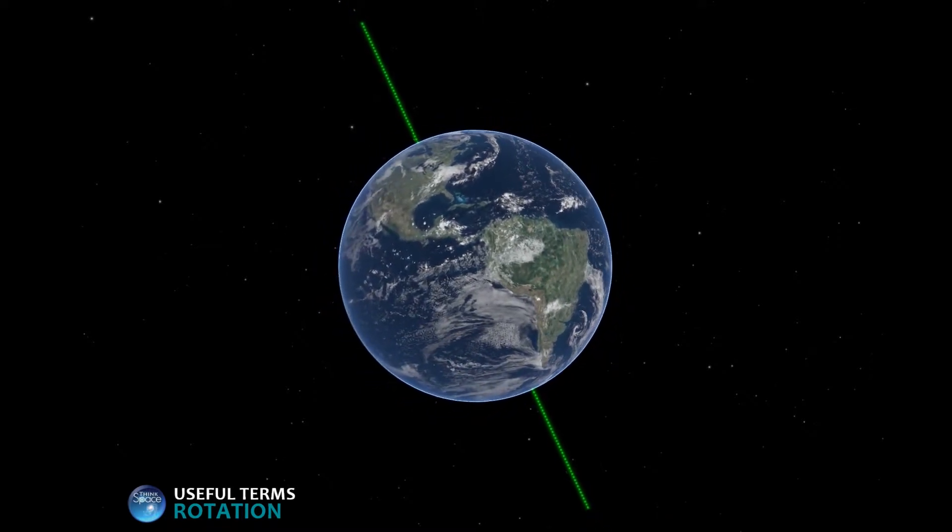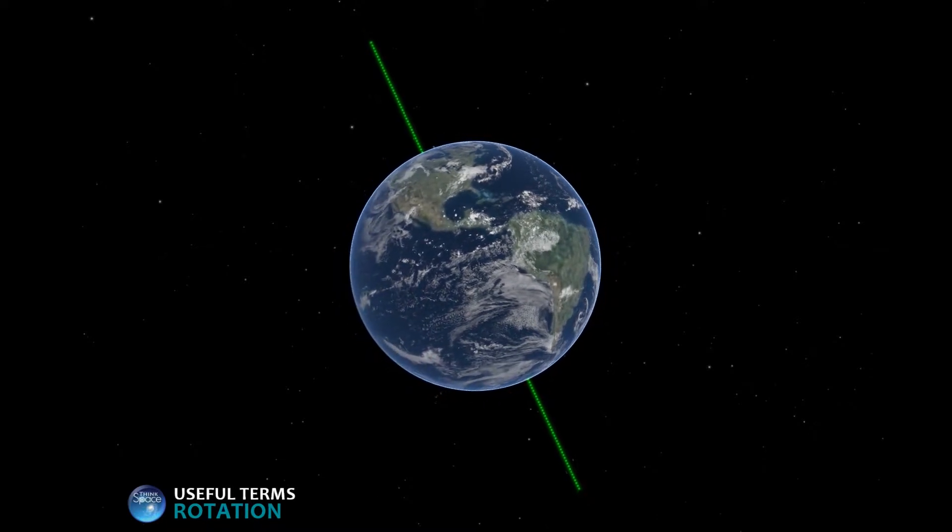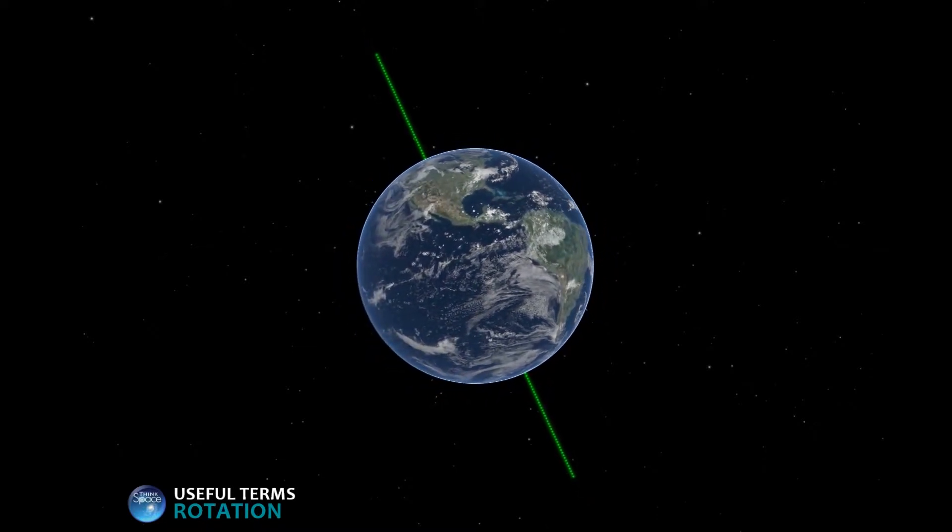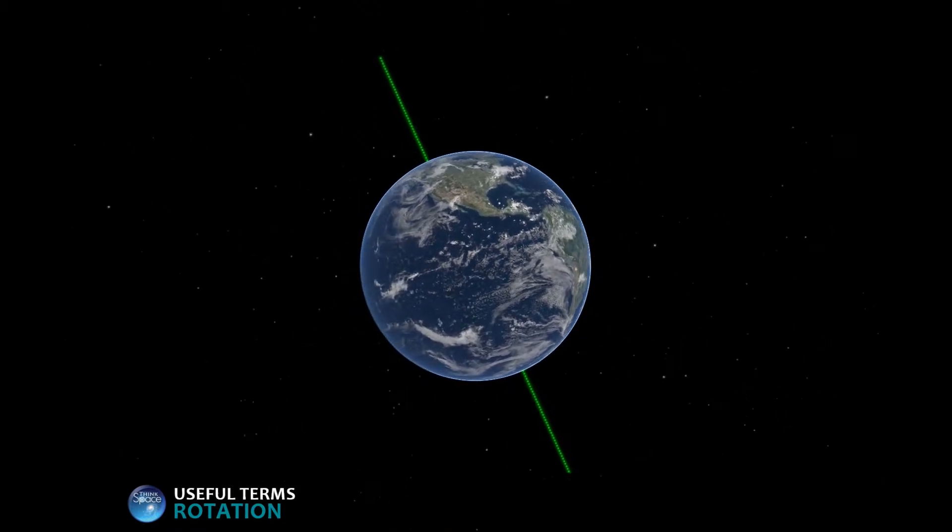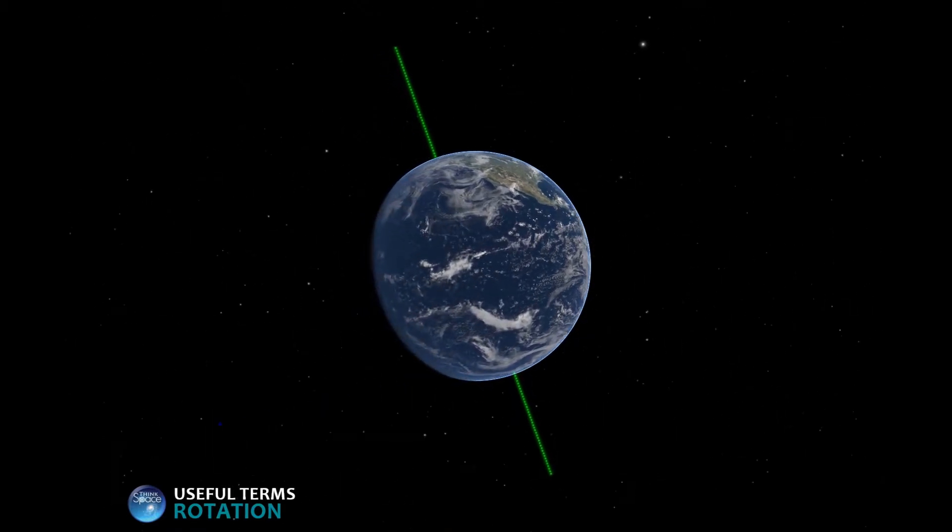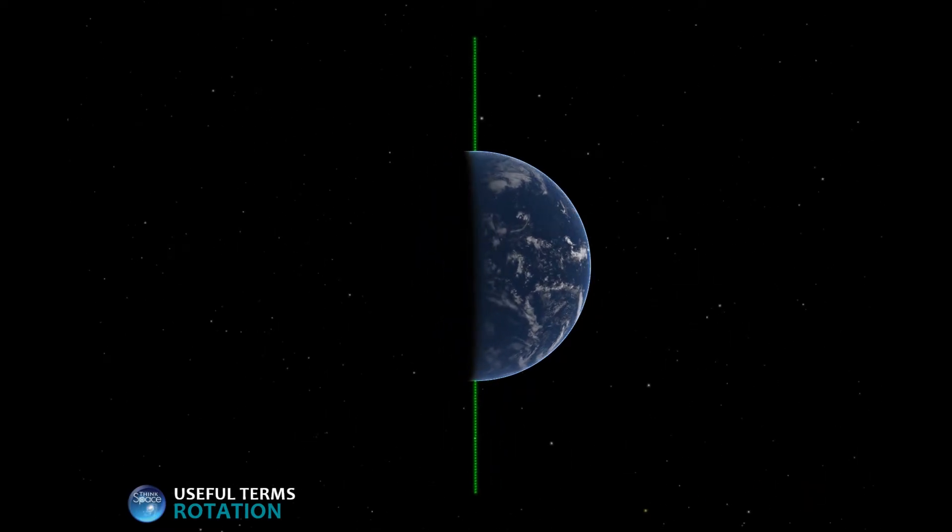As the Earth spins, different locations move from day into night and back into day. You can see this better if we swing around to the side. There.